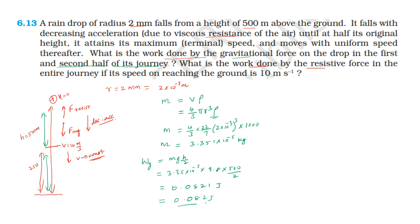This is the work done by the gravitational force in the first half and the second half. The displacement for the first half and second half is each 250 m. The work done by the gravitational force is the same for both halves — approximately 0.082 J each.